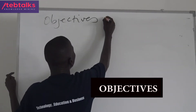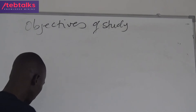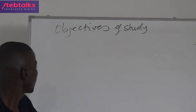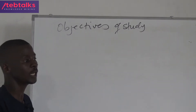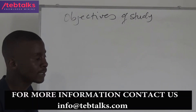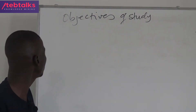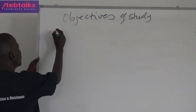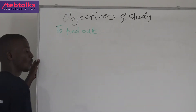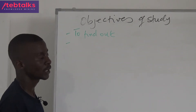The objectives of study are very many, but they should be related to the topic of study. We usually use three or four words when we are setting our objectives, but usually we emphasize two: we can use the word 'to find out,' or if we don't use that, we can use the word 'to identify.'